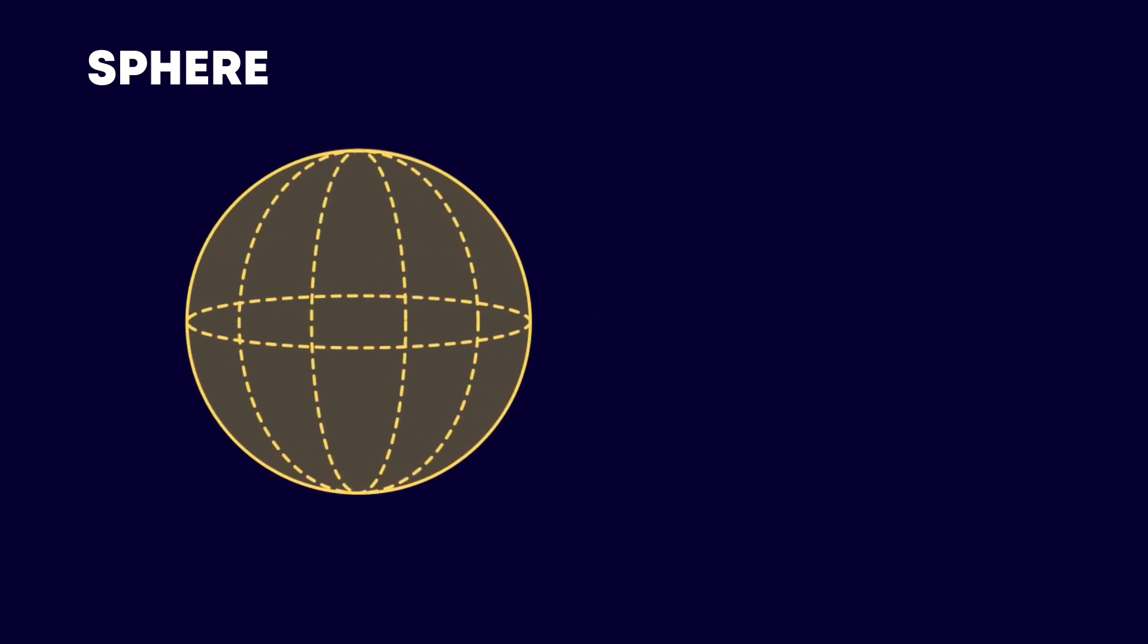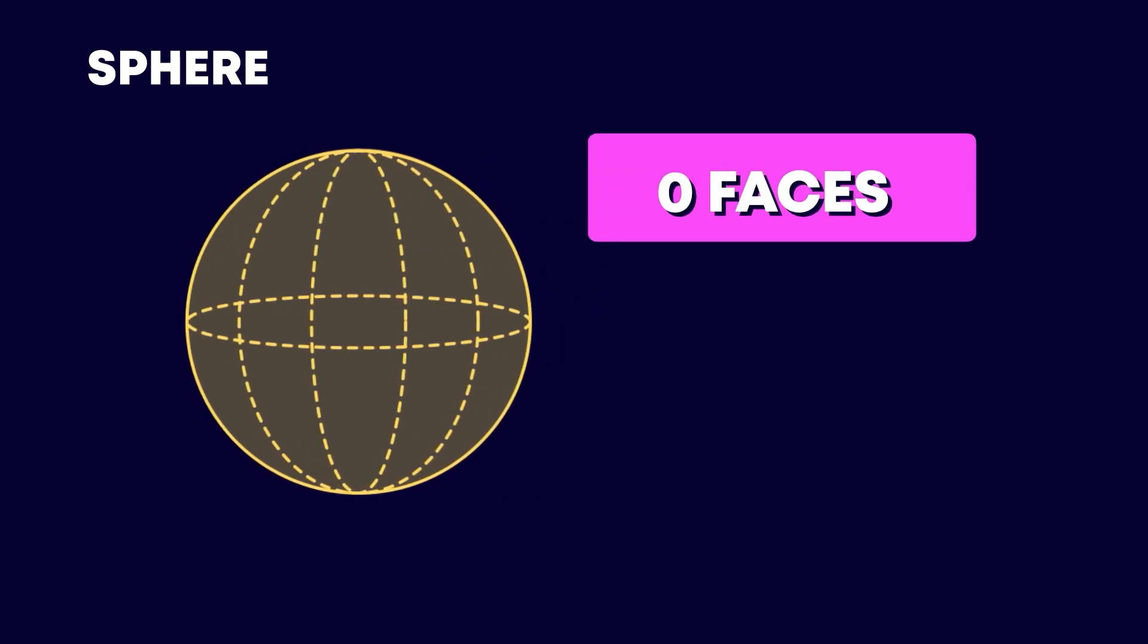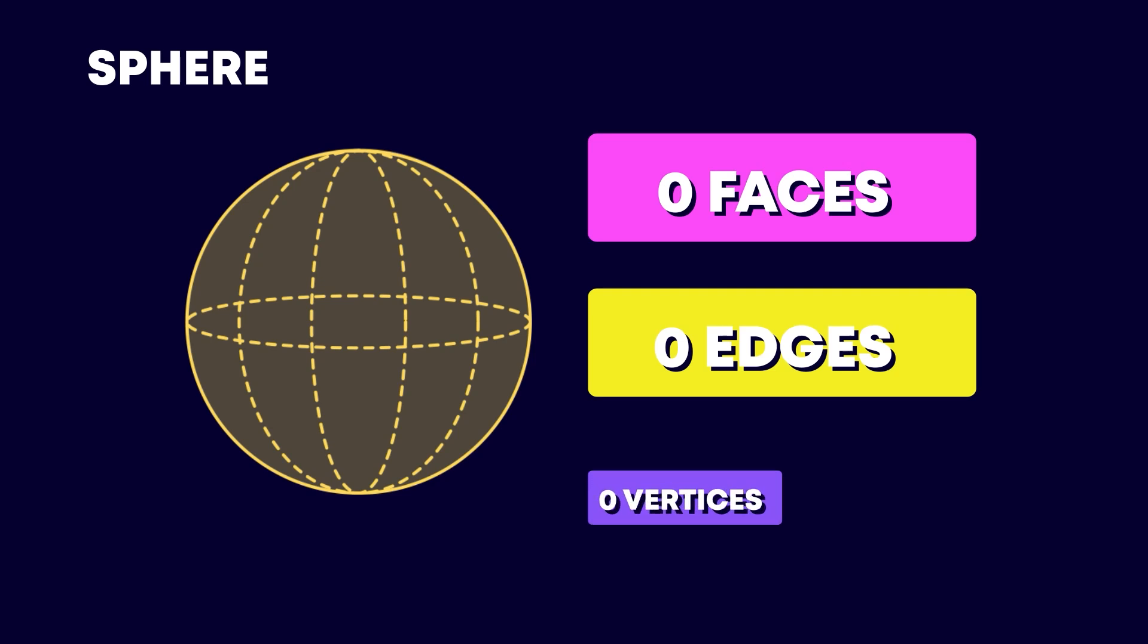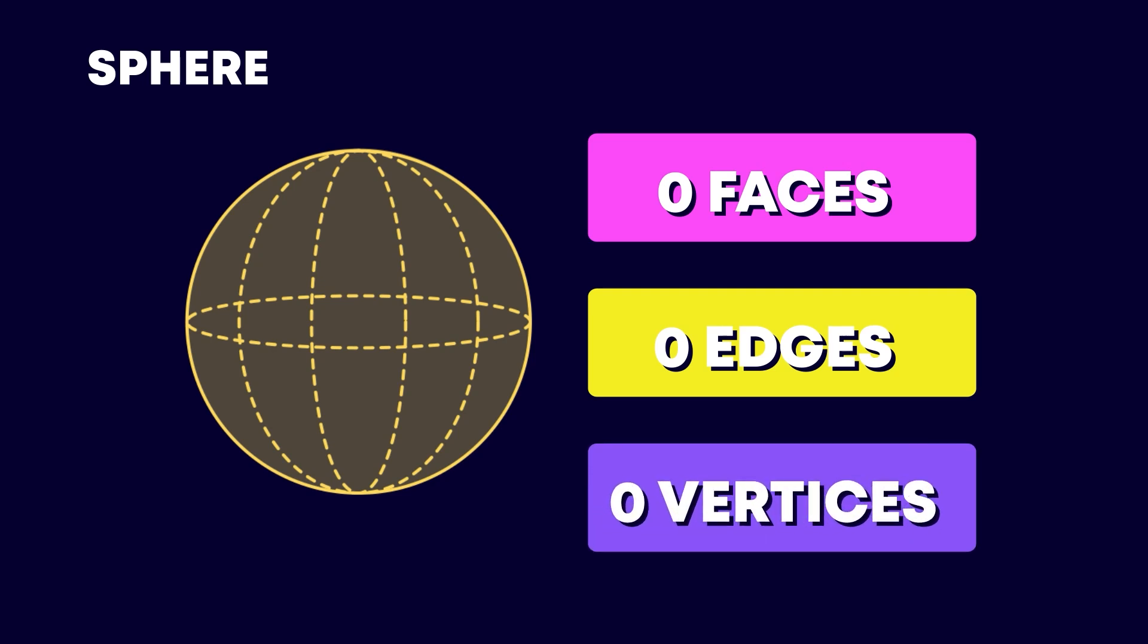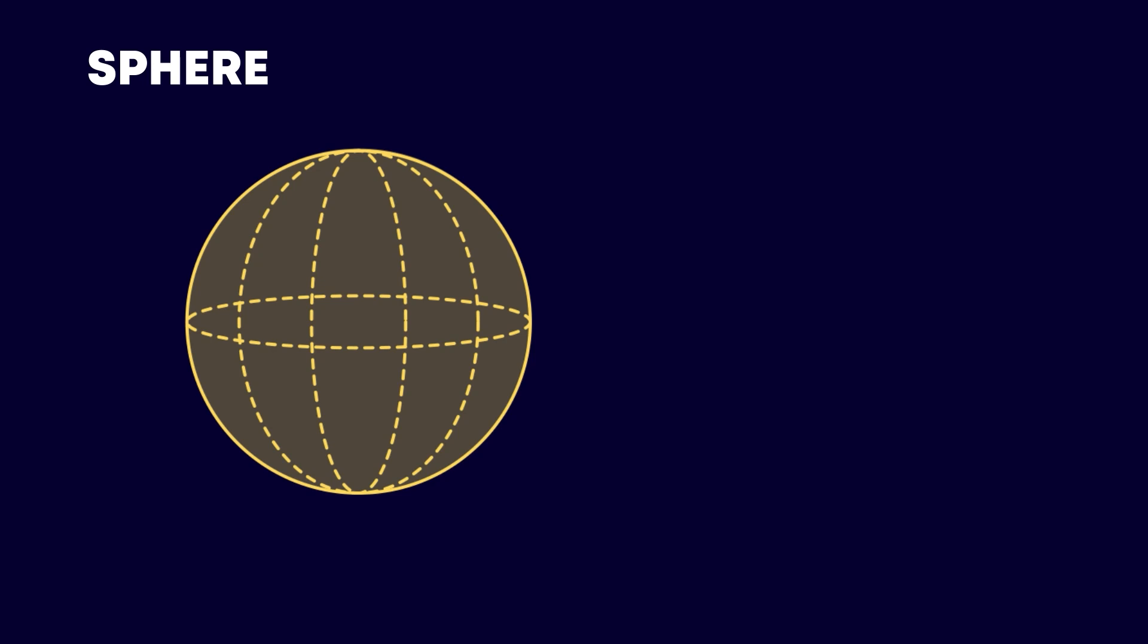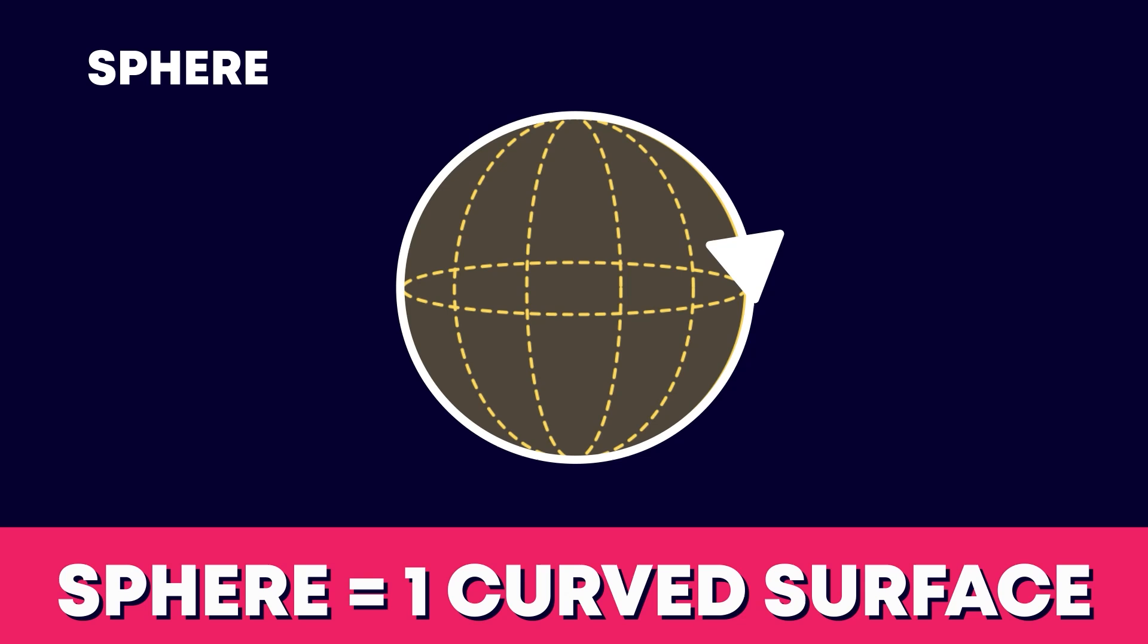A sphere is curved all the way around. It has 0 flat faces, 0 edges and 0 vertices. We can say it has 1 curved surface.